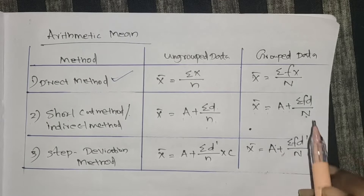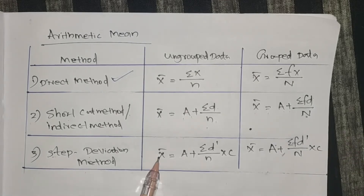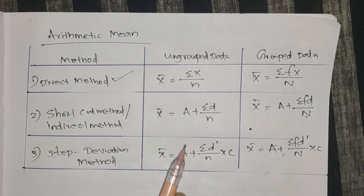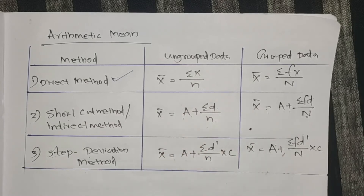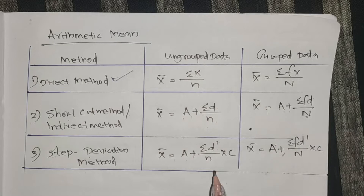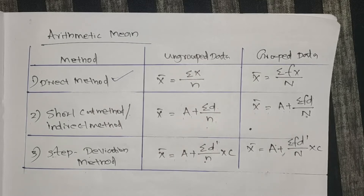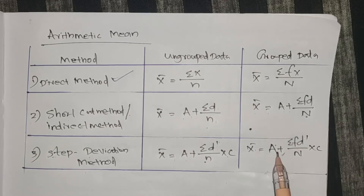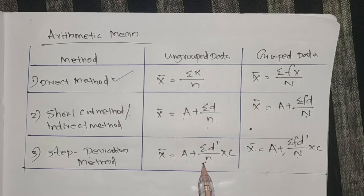For the step deviation method, the formula is x̄ equals A plus sigma fd dash divided by N into C, where A is the assumed mean, d dash is the deviation divided by common factor C, and N is the frequency total.